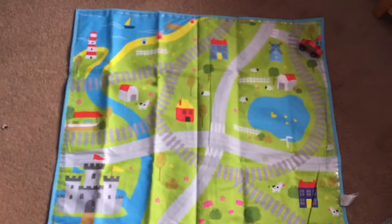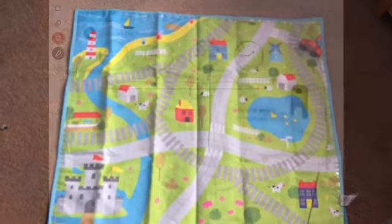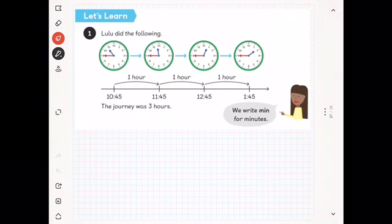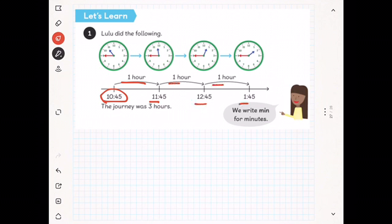So how long did it take for the car to get from the castle to the windmill? So we're going to look at a couple of different methods to show how we can work out this. Lulu used the method whereby she's identified the start time as ten forty-five. She's then recognised that each jump could be represented by an hour. So the first hour would take us to eleven forty-five, the next hour would take us to twelve forty-five, and then another hour would take us to one forty-five, which we already know is our answer.